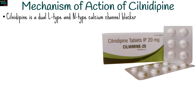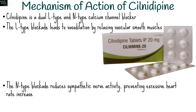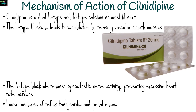Silnidopine is a dual L-type and N-type calcium channel blocker. The L-type blockade leads to vasodilation by relaxing vascular smooth muscles, thereby reducing blood pressure. The N-type blockade reduces sympathetic nerve activity, preventing excessive heart rate increase. This dual action makes silnidopine distinct from other calcium channel blockers and contributes to a lower incidence of reflex tachycardia and pedal edema.